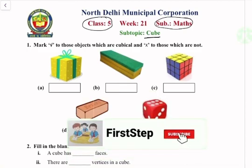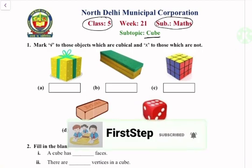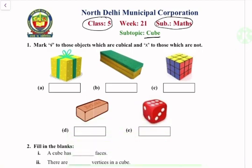Question number 1: Mark tick to those objects which are cubical and cross to those which are not. So in the options, we can see that this first one is a cube. This is not a cube. Next option — this is a cube. This brick is not a cube. And this dice is not a cube.